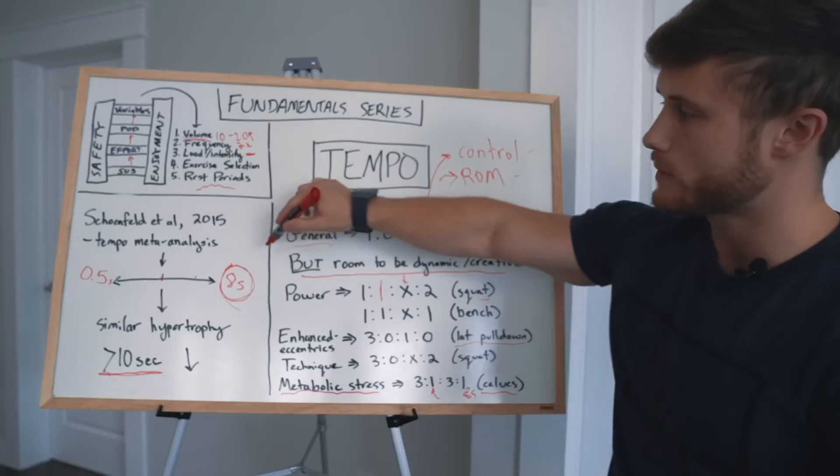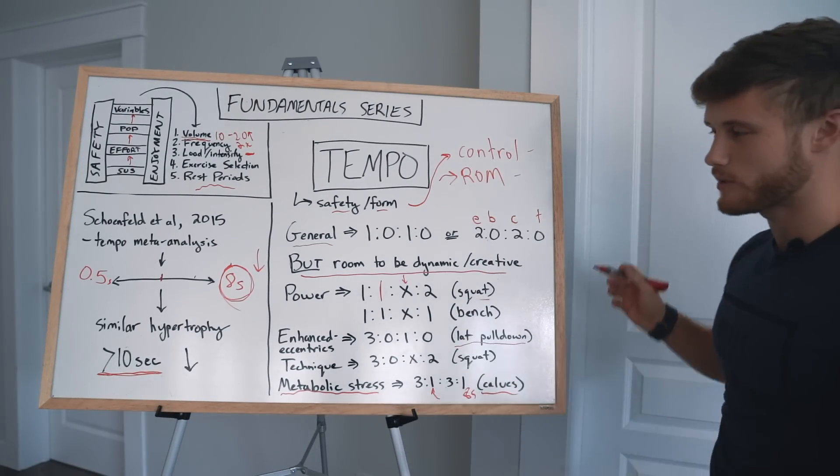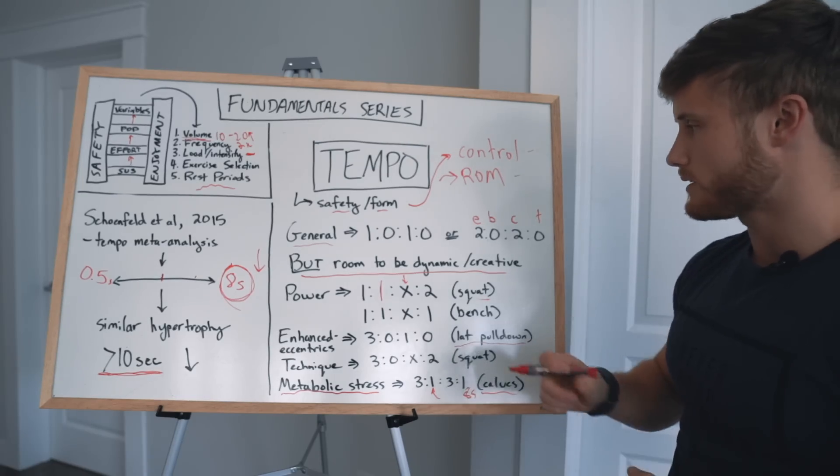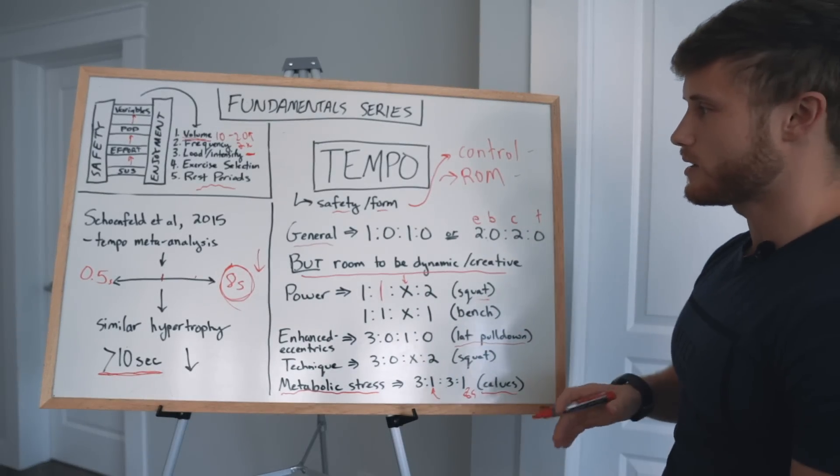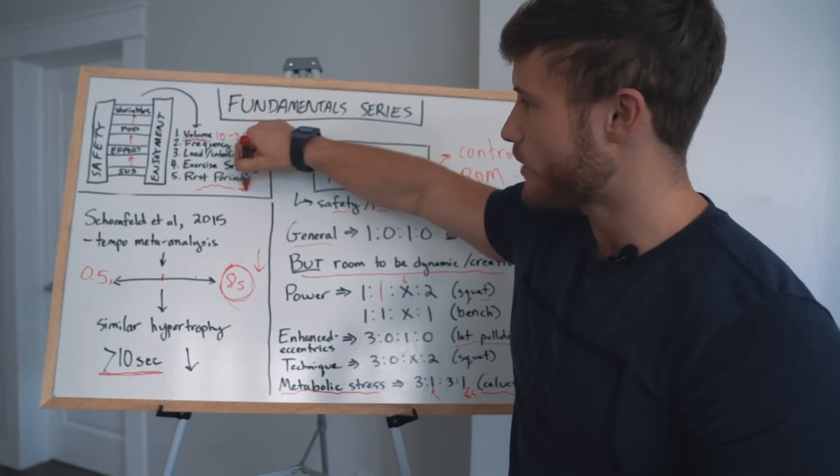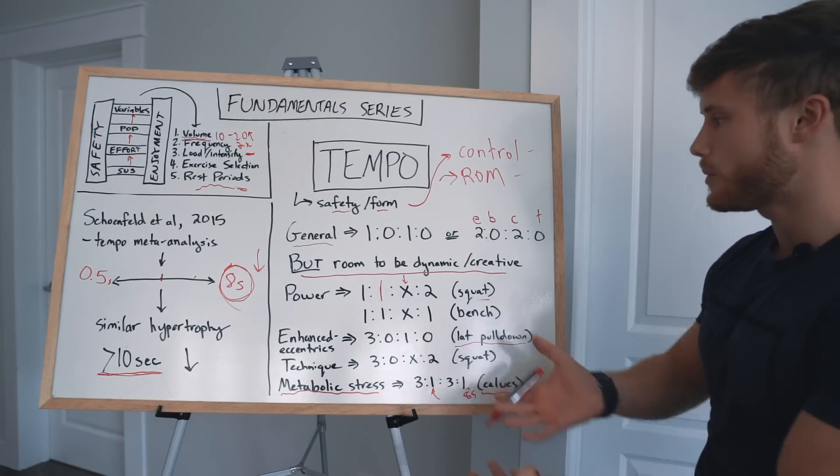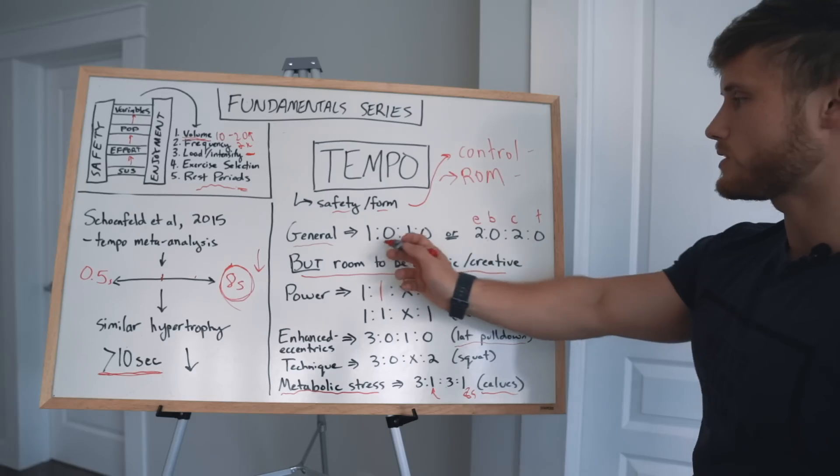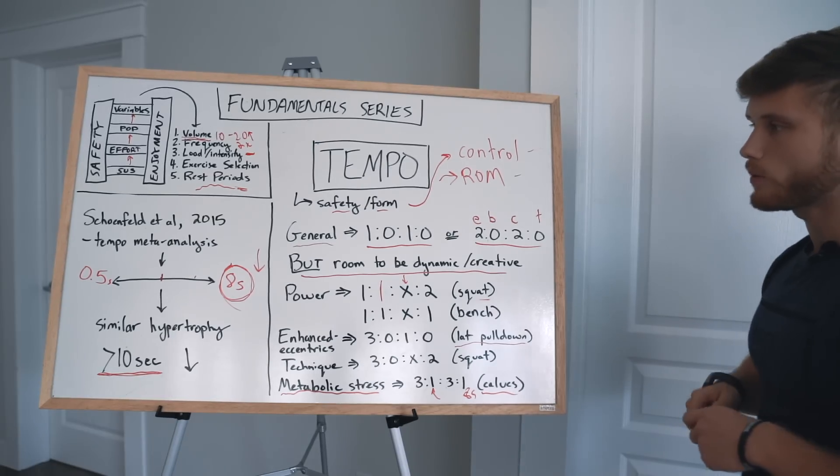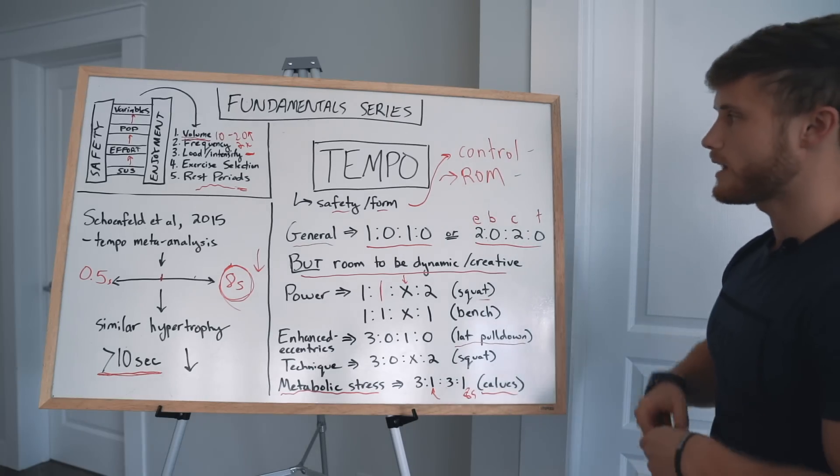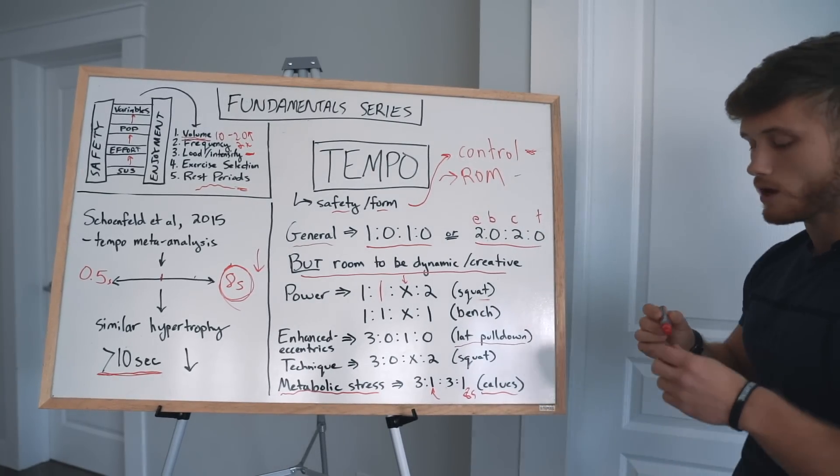So that's my whole spiel on tempo. Hopefully that was interesting with some of the specific examples. But in general, I think that for most of your lifts, it actually doesn't need to be nearly this complicated. Again, we're talking about something that isn't all that highly ranked on the order of priority, but it can certainly make training a little bit more interesting and a little bit more specific. All is considered, I would say, a 1-0-1-0 lifting tempo or a 2-0-2-0 is probably what I'm going with most of the time with the main criteria being that you are training through a full range of motion and you've got good control, especially on the eccentric.